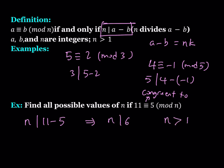So what integers divide 6? We have 1, 2, 3, and 6. Since we're not going to count 1, we have 2, 3, and 6. These are going to be the possible values of n.